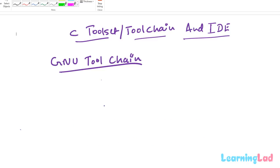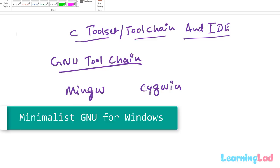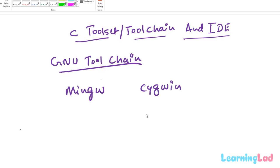The GNU toolchain is available in all Unix-based environments, but on Windows you have two options: you can install MinGW or Cygwin, and both provide the GNU toolchain on Windows. MinGW stands for Minimalist GNU for Windows and provides the GNU toolchain for Windows-specific application development, while Cygwin provides a Unix-like environment in Windows. In this video series we will be using MinGW — Minimalist GNU for Windows.